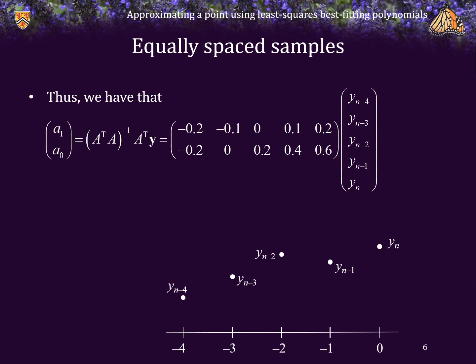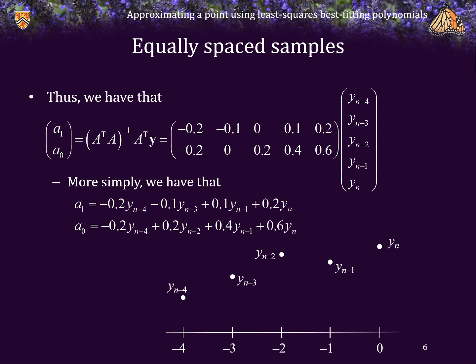Thus we have that the solution for the two coefficients of the least squares best fitting straight line can be found simply by taking linear combinations of the previous y values. More simply, if we multiply it out, we notice that both a1 and a0 are just linear combinations of the y values, and that gives us our least squares best fitting straight line that passes through the data.